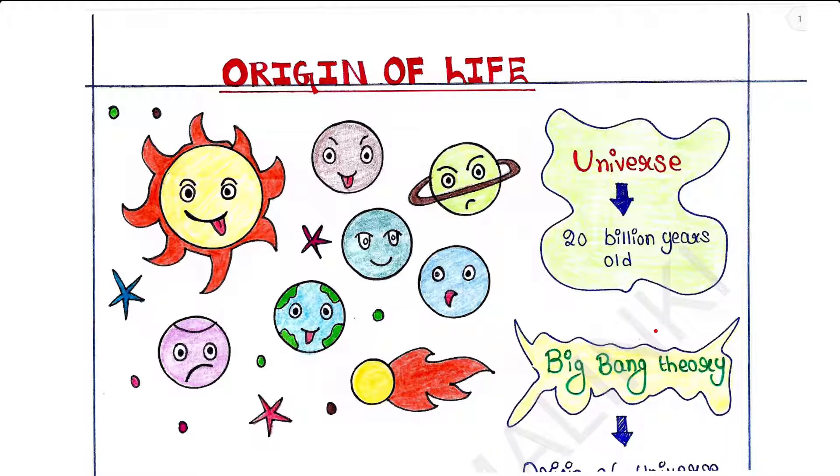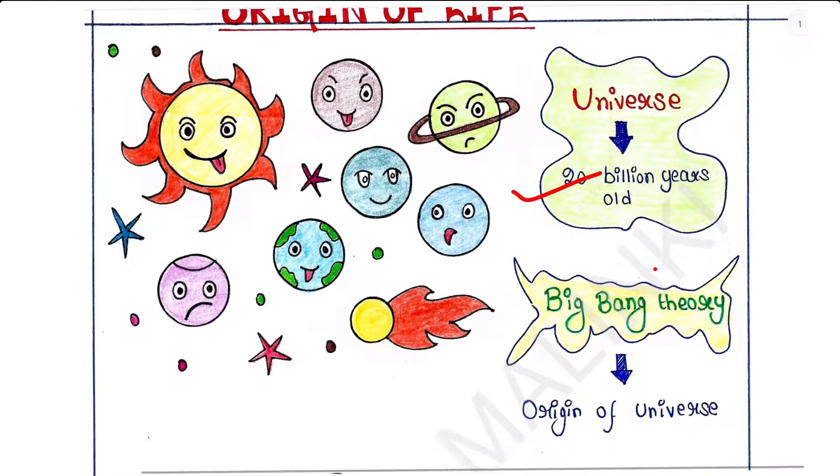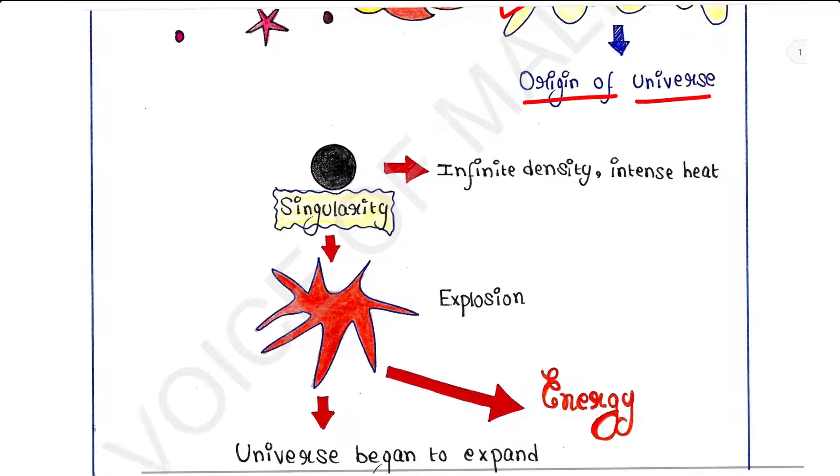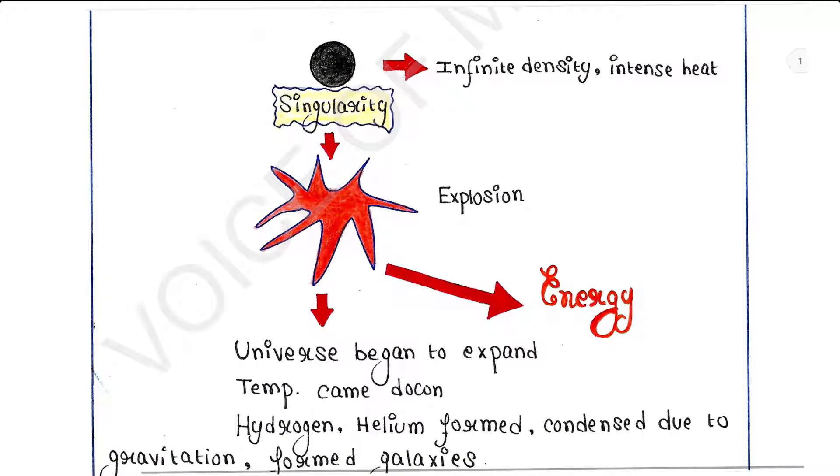Our universe is very old, almost 20 billion years old. Now, Big Bang theory explains the origin of universe. At the time, all matter was compacted into a very small ball with infinite density and intense heat.